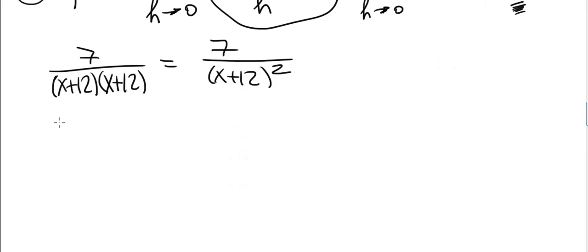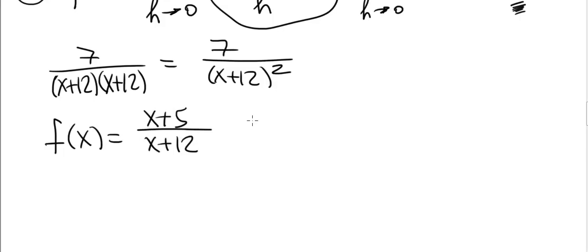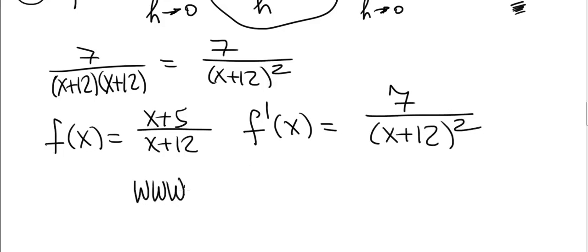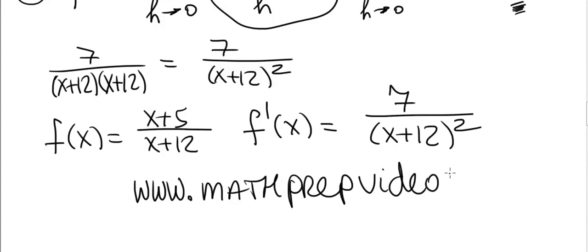To summarize: using the definition of the derivative, we started with the function f of x equals x plus 5 divided by x plus 12, and found its derivative equals 7 divided by x plus 12 squared. For more videos, visit www.mathprepvideos.com.